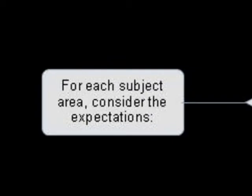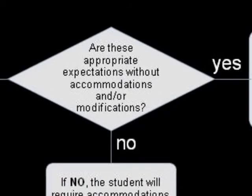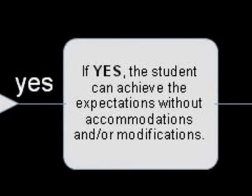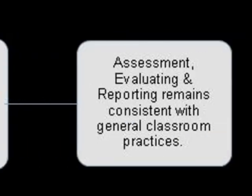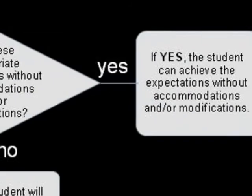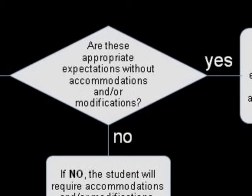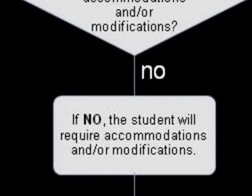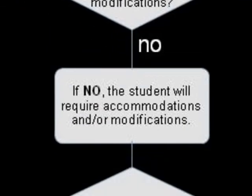We begin by considering each student's needs. When we consider the grade-specific curriculum expectations for this student, the first question becomes: are these appropriate? If yes, then general classroom assessment and reporting practices apply. When we determine that the grade-specific curriculum expectations are not appropriate, then the student will require accommodations and/or modifications.